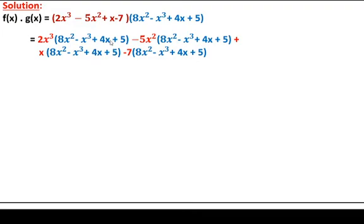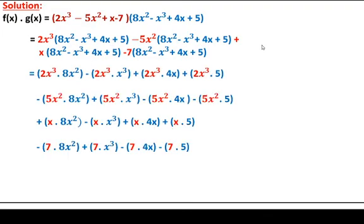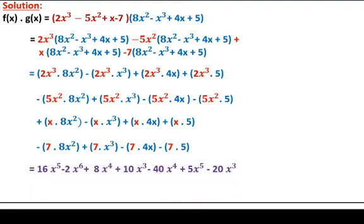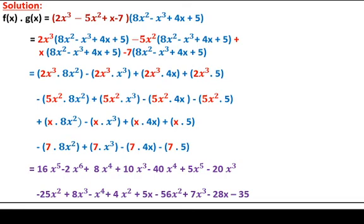This is how we multiply polynomial functions. Expanding the expression, we get: 16x to the 5th, minus 2x to the 6th, plus 8x to the 4th, plus 10x cubed, minus 40x to the 4th, plus 5x to the 5th, minus 20x cubed, minus 25x squared, plus 8x cubed, minus x to the 4th, plus 4x squared, plus 5x, minus 56x squared, plus 7x cubed, minus x, minus 35. Multiply every term carefully and operate under addition and subtraction.